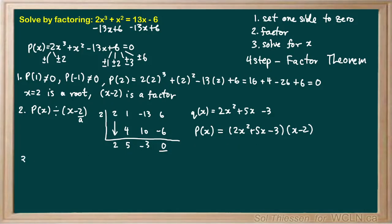Step 3 is to repeat the process of finding a root and dividing by the corresponding factor until we have a quadratic quotient. In this case our quotient 2x squared plus 5x minus 3 is already quadratic, so step 3 is not necessary. We can move right to factoring this quadratic.